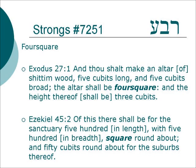In Ezekiel 45:2 — Of this there shall be, for the sanctuary, 500 in length with 500 in breadth, square roundabout, and 50 cubits roundabout for the suburbs thereof — talking about the Millennial Temple.